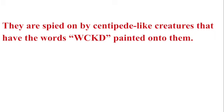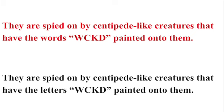'They are spied on by centipede-like creatures that have the words WCKD painted onto them.' This is actually a good sentence except for one thing: WCKD is not words, plural — it's letters. So this would have been better stated: 'They are spied on by centipede-like creatures that have the letters WCKD painted on them.' That may seem minor, but as a writer you're trying to help your reader move through your thoughts smoothly. You don't want them stopping and going, 'Wait, that's not words, that's letters.' That slows your reader down, so get it accurate.